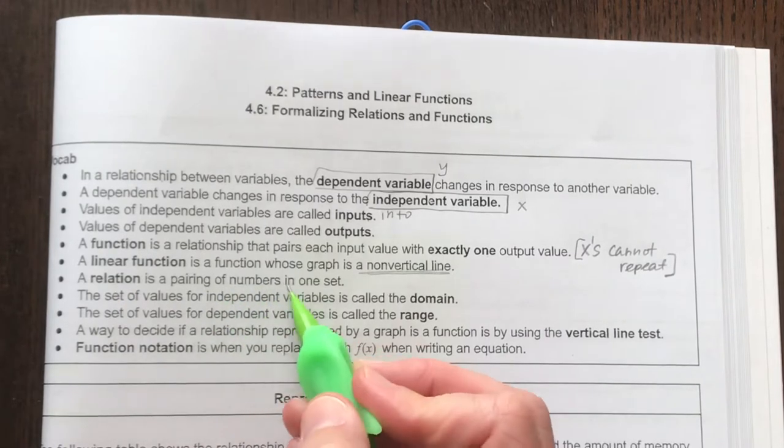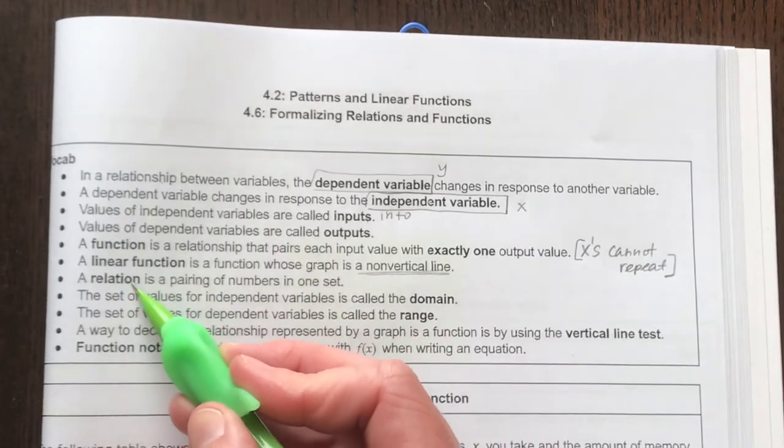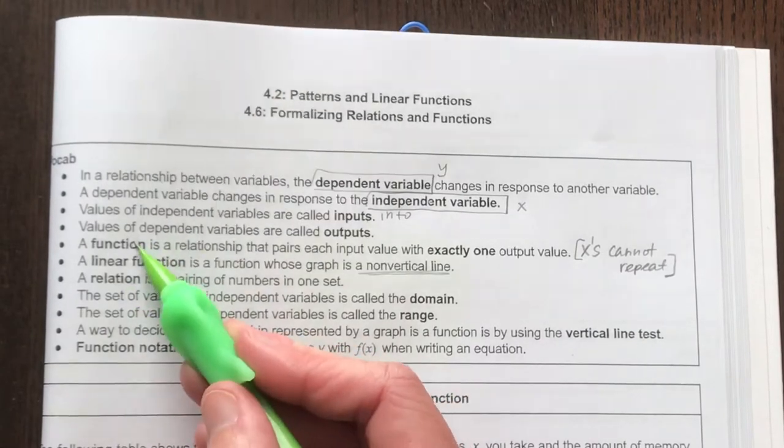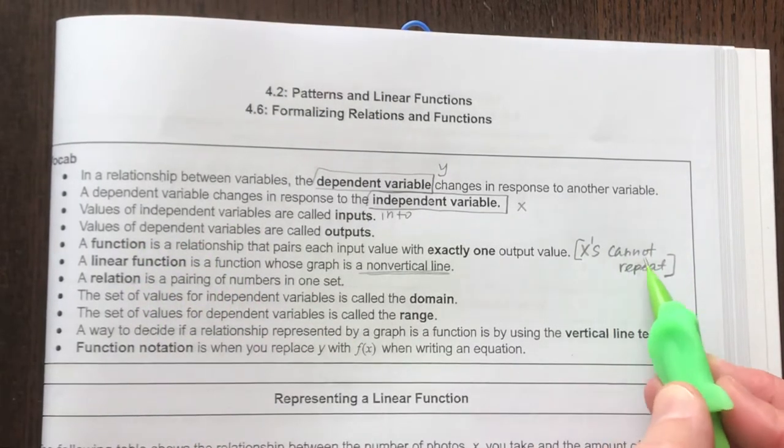A relation is a pairing of numbers in one set. So normally what we do is we look at all kinds of relationships and then determine if they are a function based on whether the x values repeat or not.